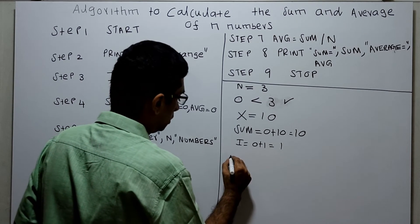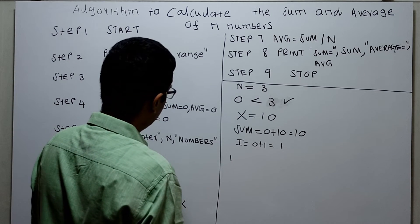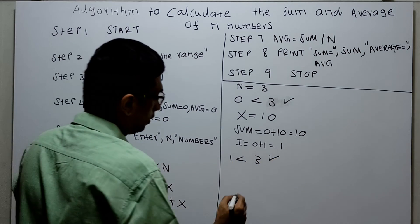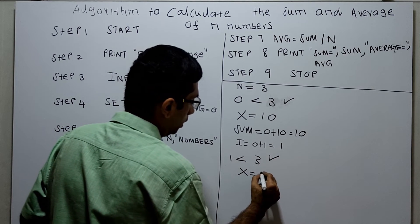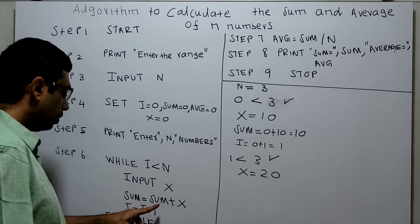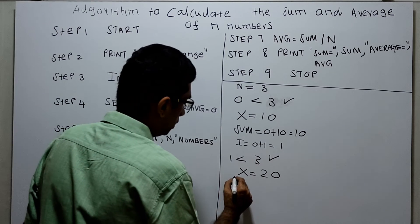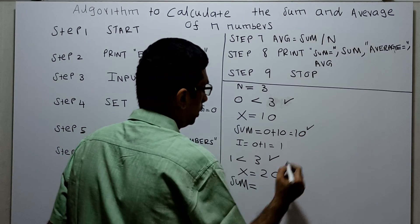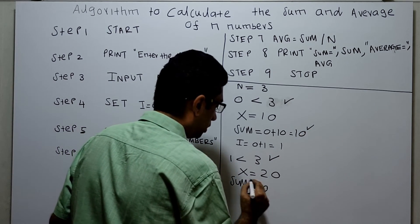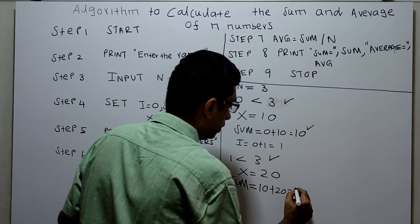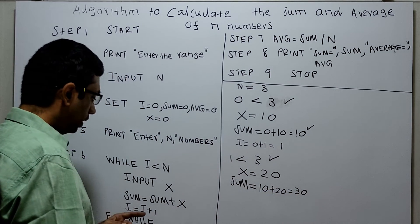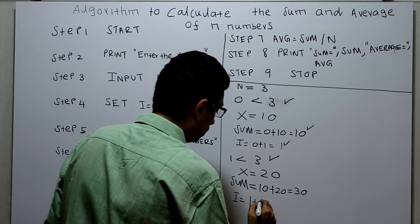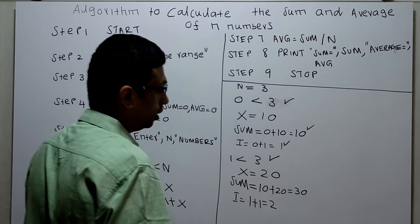Second iteration: i is 1, 1 less than 3 is true. Input x — I give 20. Sum equal to existing sum (10) plus 20 equals 30. Then i equal to 1 plus 1, so i equal to 2.